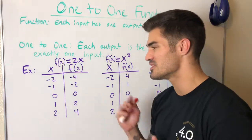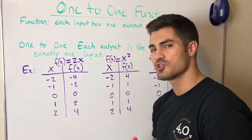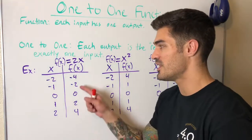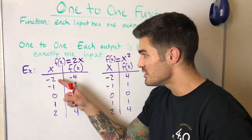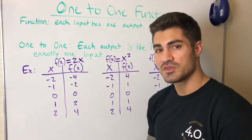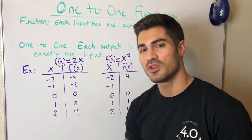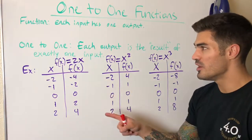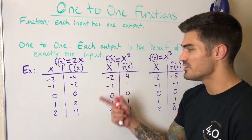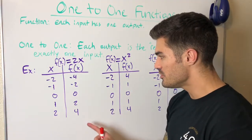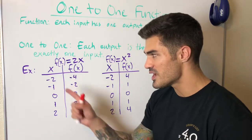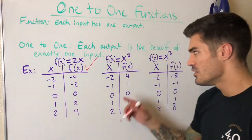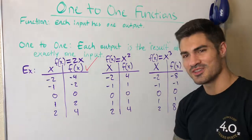We can't have an output that results from two or more different inputs — if that's the case, it's not one-to-one. Let's look at some examples. You may see examples as a chart, a graph, or an equation. For this first chart example, I see one input and one output, so it is a function. Each output appears only once and is the result of exactly one input, so this is a one-to-one function.